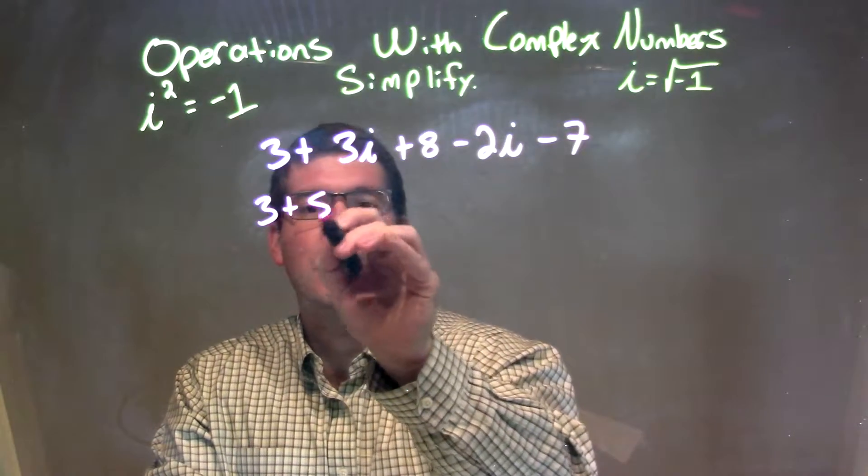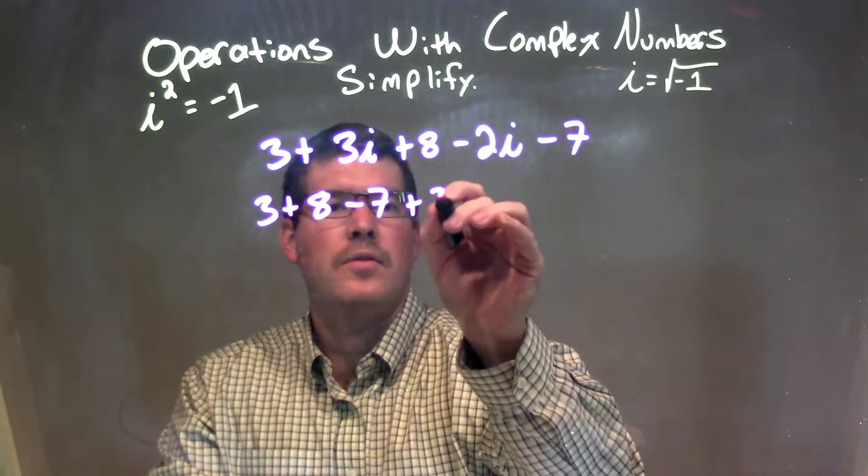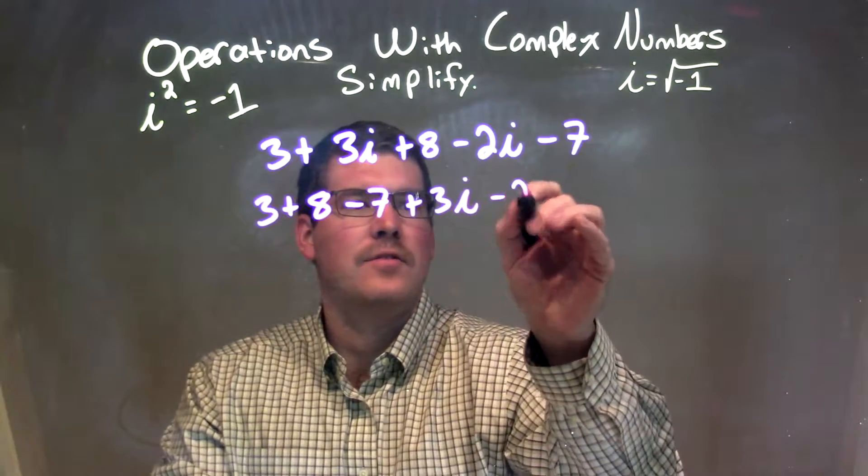We have 3 plus 8 minus 7, then we have plus 3i minus 2i.